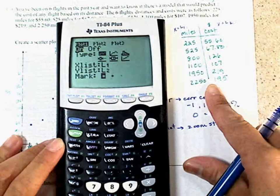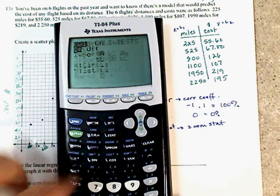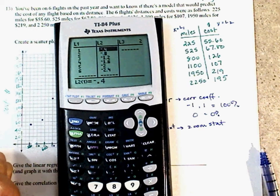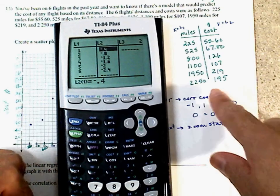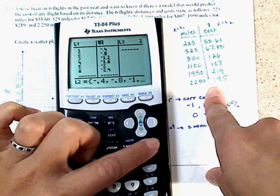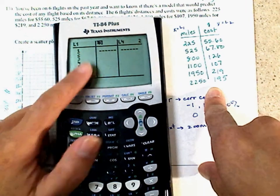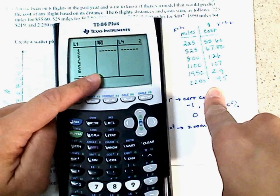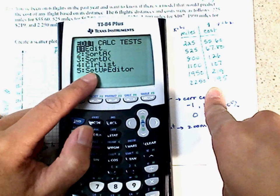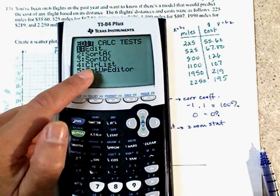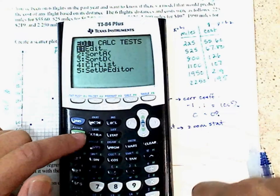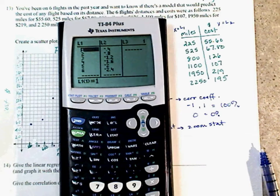X is going to be your L1, which is your miles. Y is going to be your L2, which is your cost. Now, the marker here, I like to use the square. You can use whichever one you want. I don't use the dot as much because I can't see, but I'm old. Now to enter your data. This is the reason I have it written as a table because it will make it a lot easier for you to enter your data. Hit stat. You see where it says edit. Hit enter.